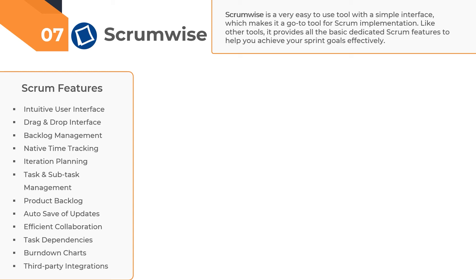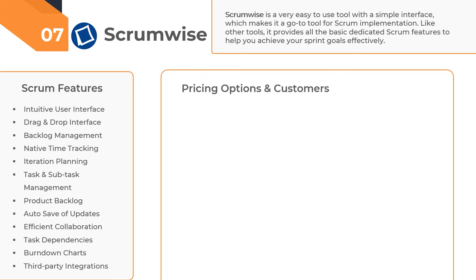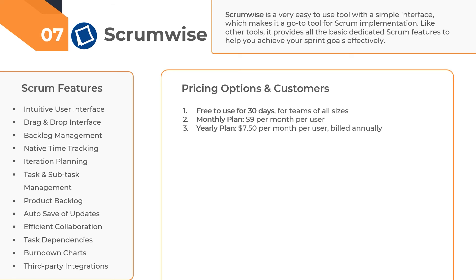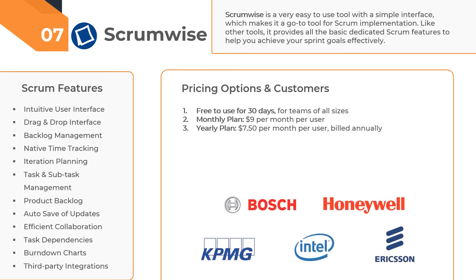While it's a more simplified Scrum tool, it isn't the least expensive tool on our list. Scrumwise gives you the option to either pay monthly at $9 per user per month, or annually at $7.50 per user per month. Some of the well-known clients of Scrumwise include Honeywell, KPMG, Whirlpool, Accenture, Bosch, TNT, Deloitte, Ericsson, and others.